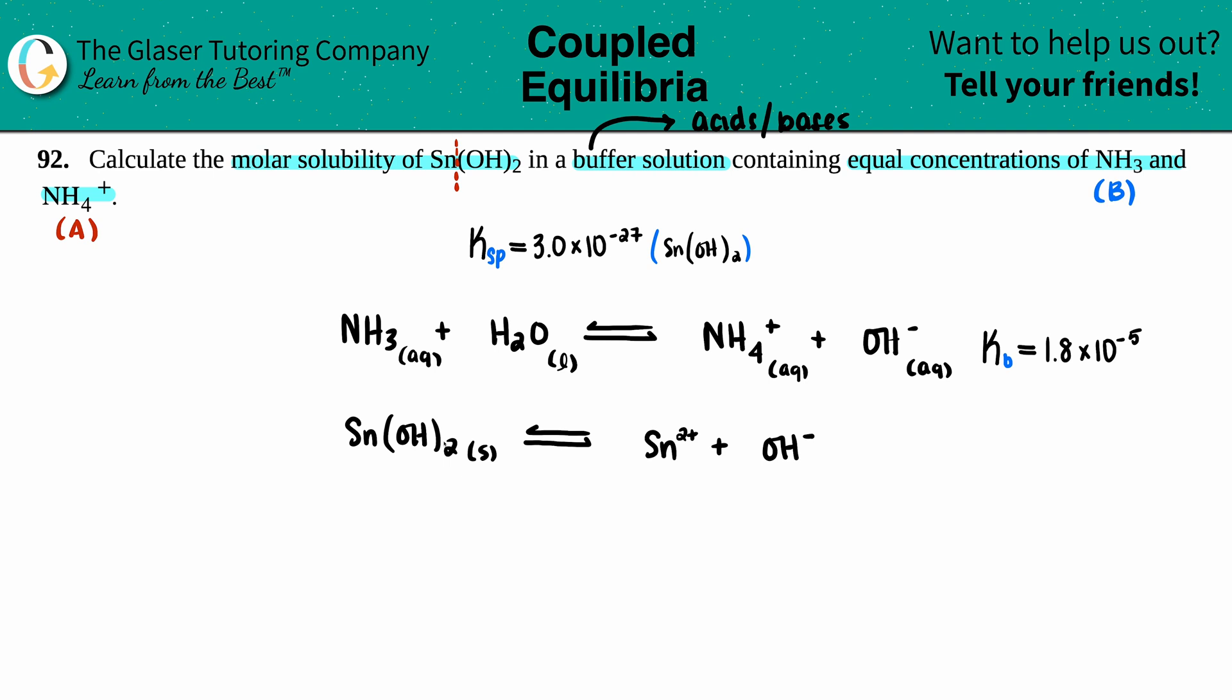There were two hydroxides, so I do have to put a 2 in front of here. Both of these are charges, so that would be aqueous. I'm just going to drag this Ksp value over here.